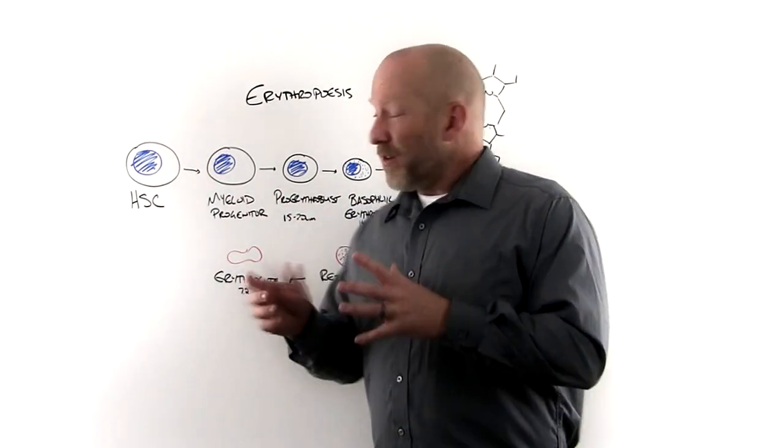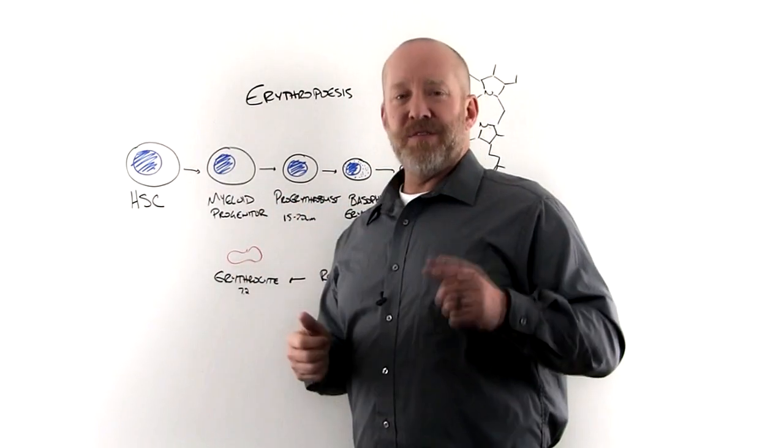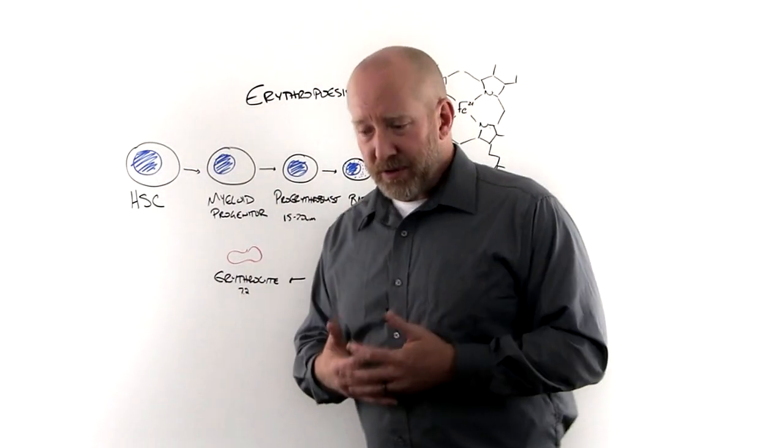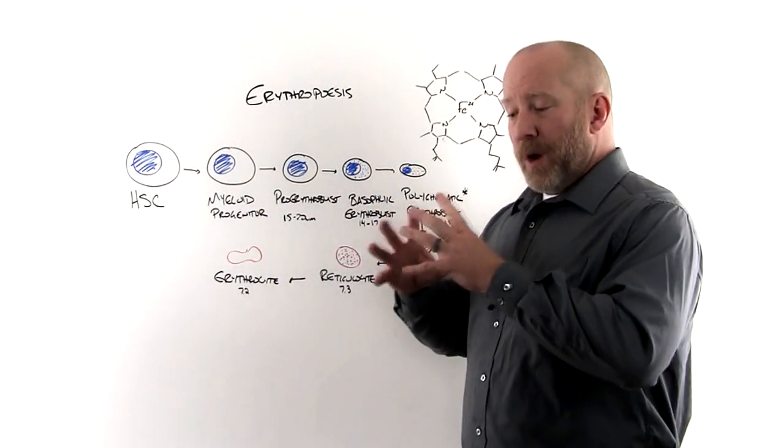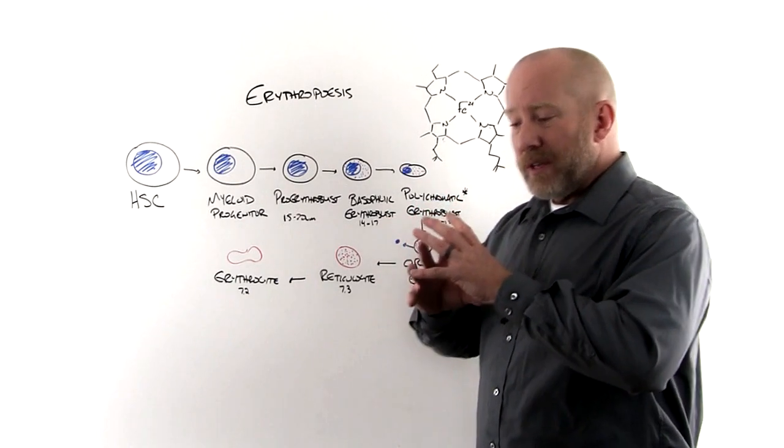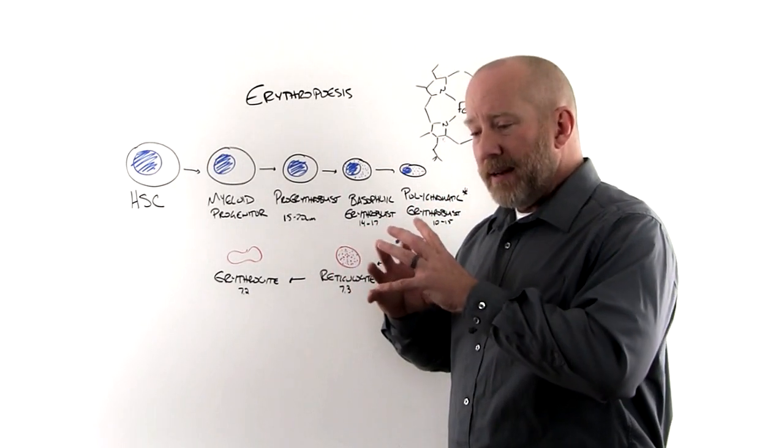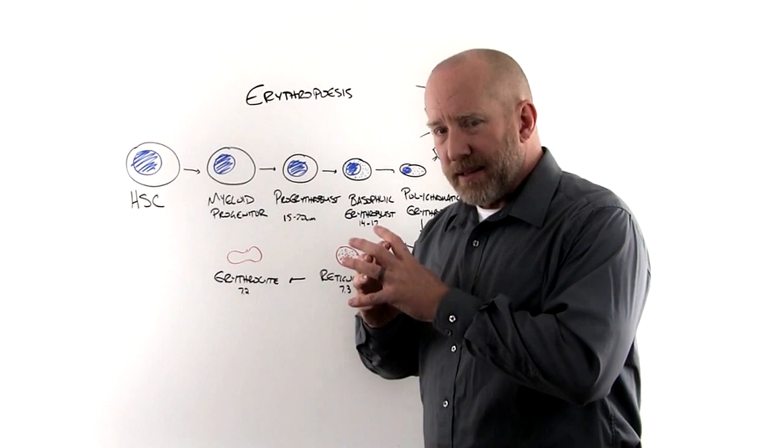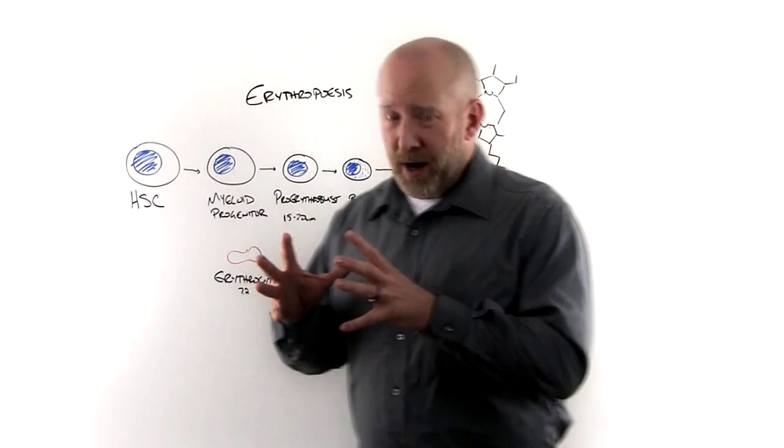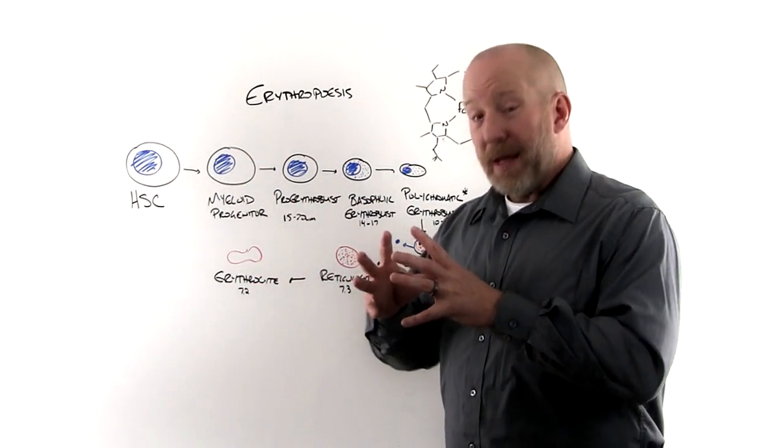What happens is if somebody is deficient in folate or B12 or both, because they work so closely together, what you get is when the nucleus is trying to mature and replicate DNA in order to divide, it can't. The cytoplasm which doesn't require folate because it's using RNA does mature.